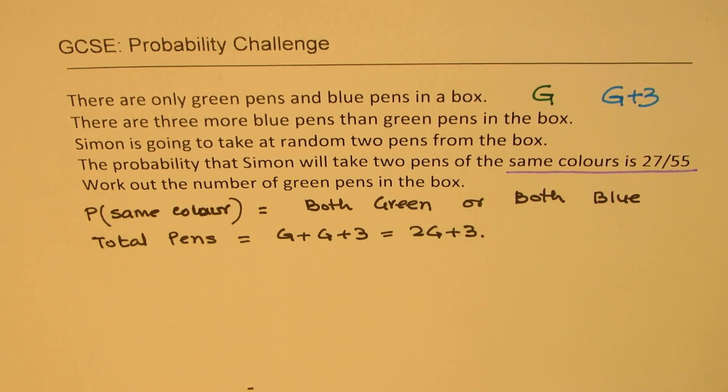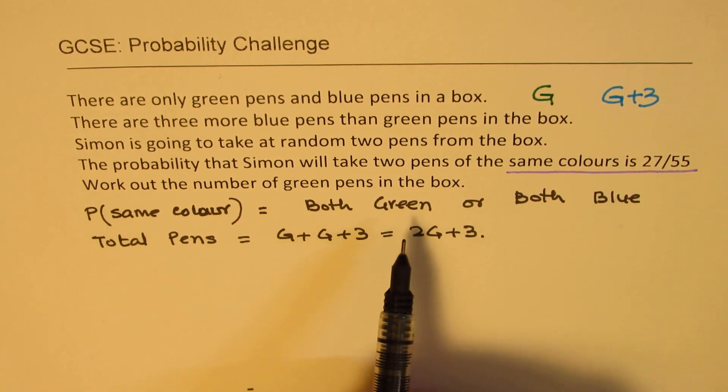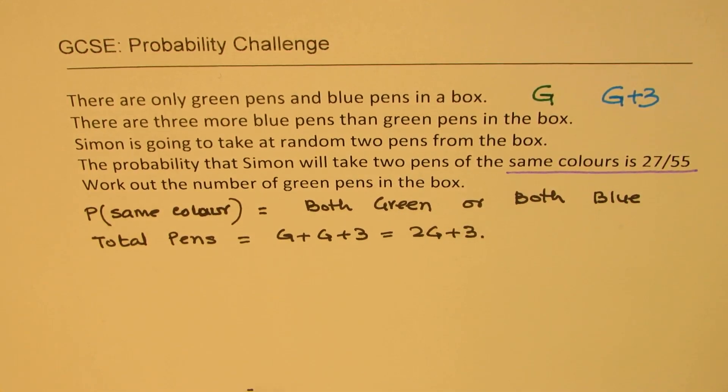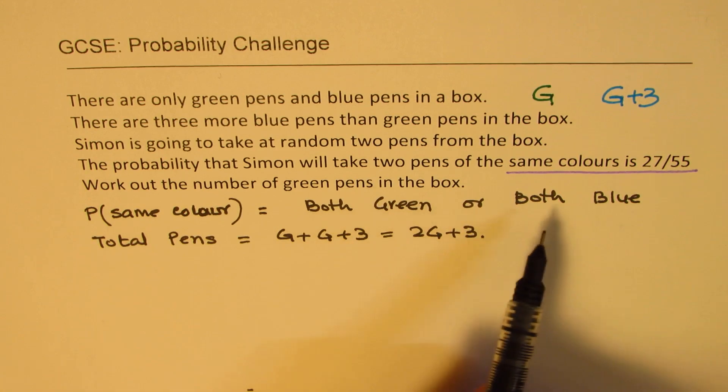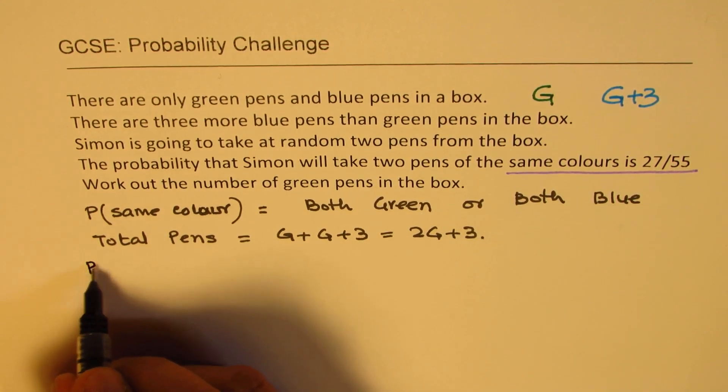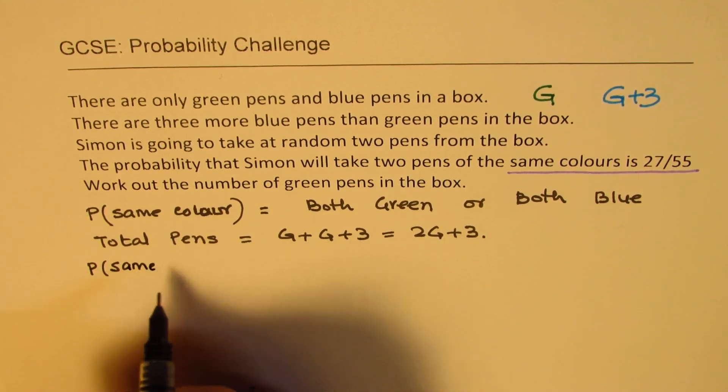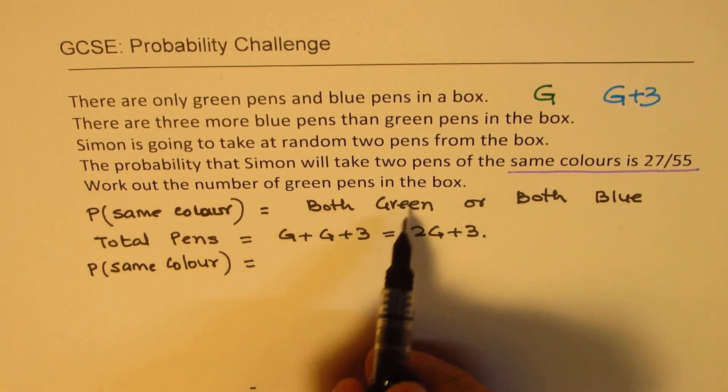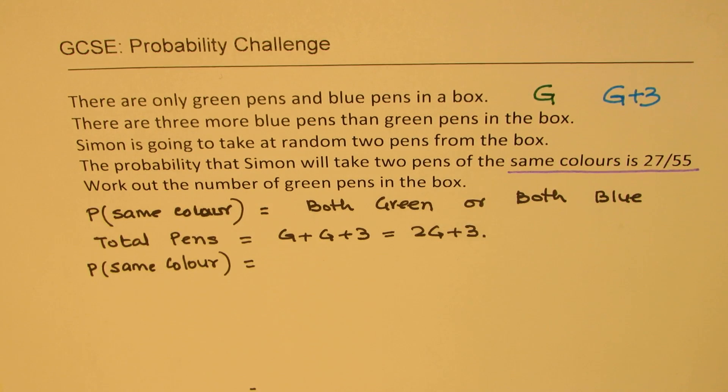When we are talking about both green or both blue, then let us work out their probabilities and 'or' means we have to add them up. When you say both green, that means first is green and second is also green. When we say both blue, means first is blue and the second one is also blue.